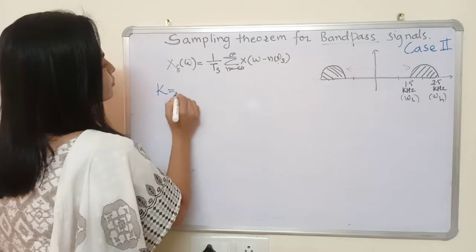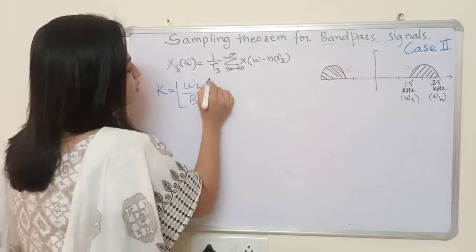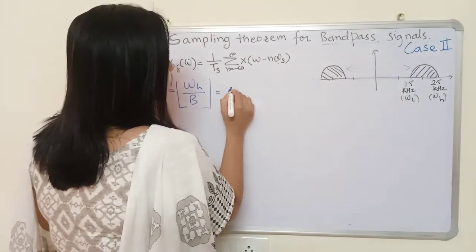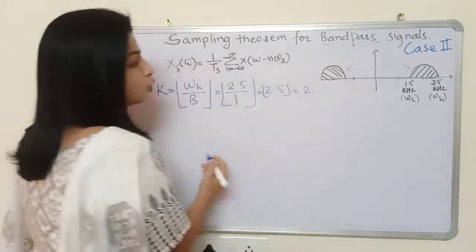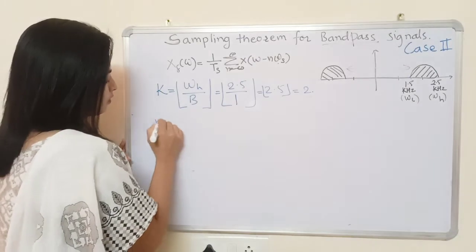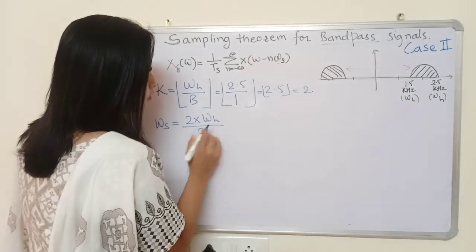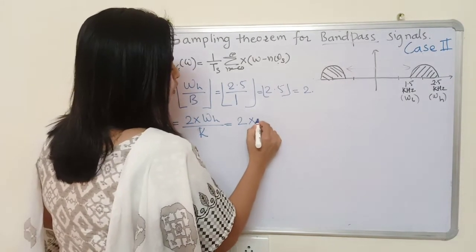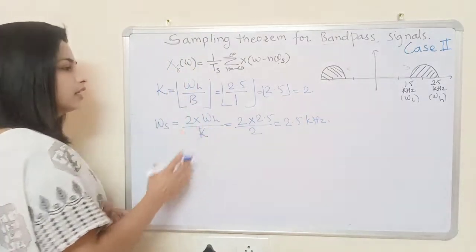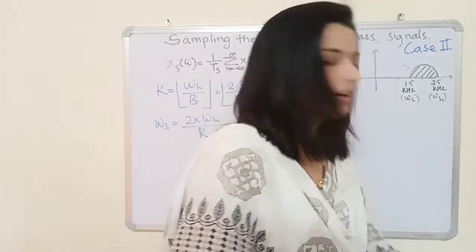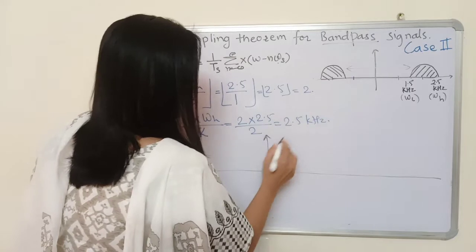We are calculating the ratio of omega_h to the bandwidth. Since it is not an integer, we round it down to the lowest integer value. Here it is 2.5, so rounding down gives us k equal to 2. Then we find omega_s using the formula: omega_s equals 2 times the higher frequency divided by k. So here it is 2 times 2.5 kHz divided by 2, which gives us a sampling frequency of 2.5 kHz. Now let's check whether aliasing is occurring with this frequency.